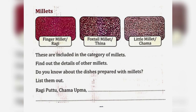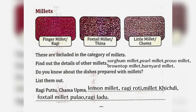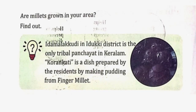Find out the details of other millets. Some of the other millets are: Sorghum millet, Pearl millet, Proso millet, Brown top millet, Barnyard millet. Do you know about the dishes prepared with millets? List them out. Ragi puttu, Chama upma, Lemon millet, Ragi roti, Millet khichdi, Foxtail millet pulav, Ragi laddu.